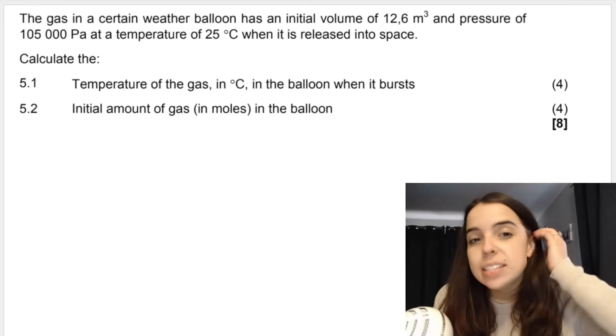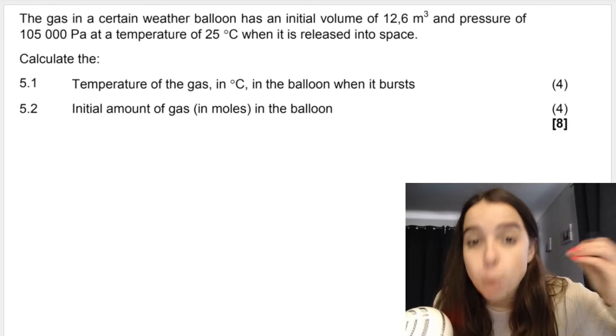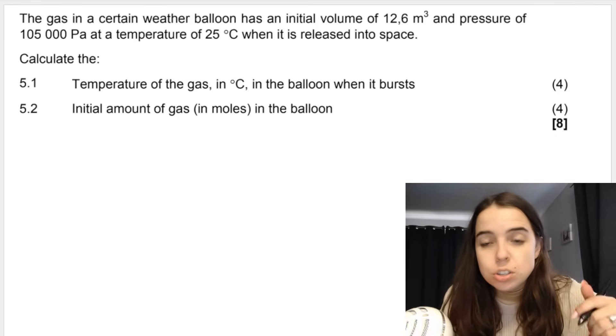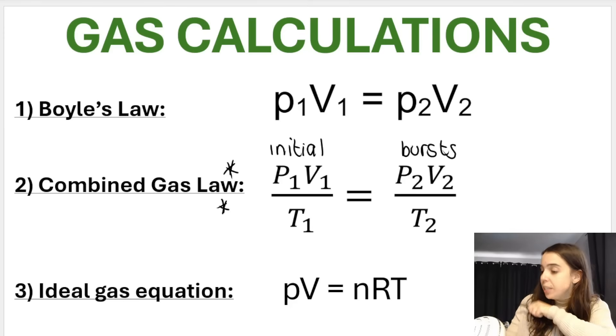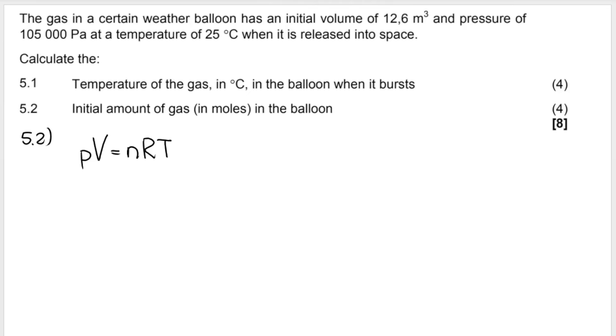The next question wants the initial amount of gas in moles in the balloon. Now, as soon as you see moles, or if you see mass or something like that, your mind needs to go to the following formula. This one over here, because the ideal gas equation is the only one that has N in it. So you get a mark for writing your formula first. Remember to write your formula as is on the formula sheet. You might get your formula mark deducted if you don't.